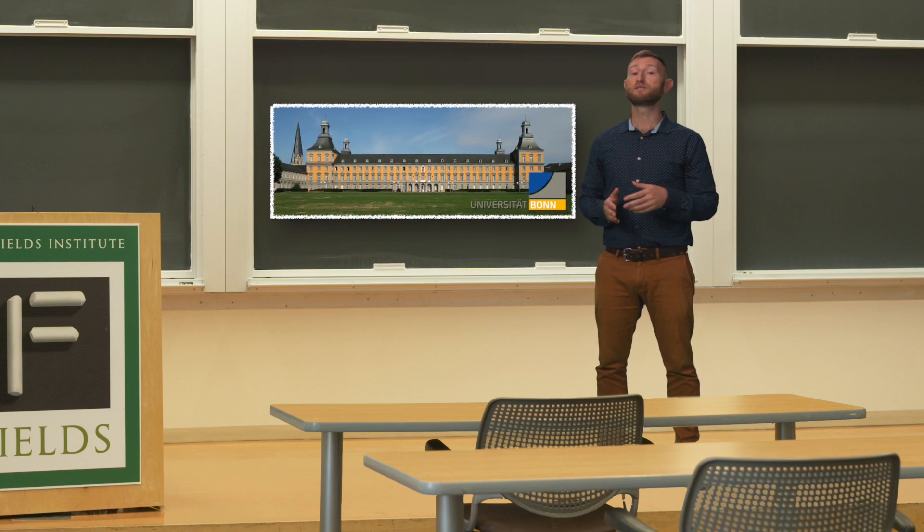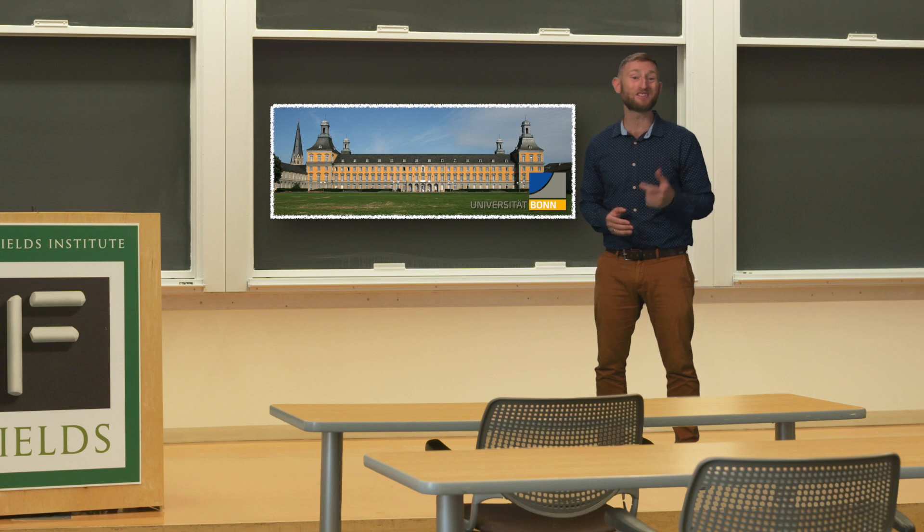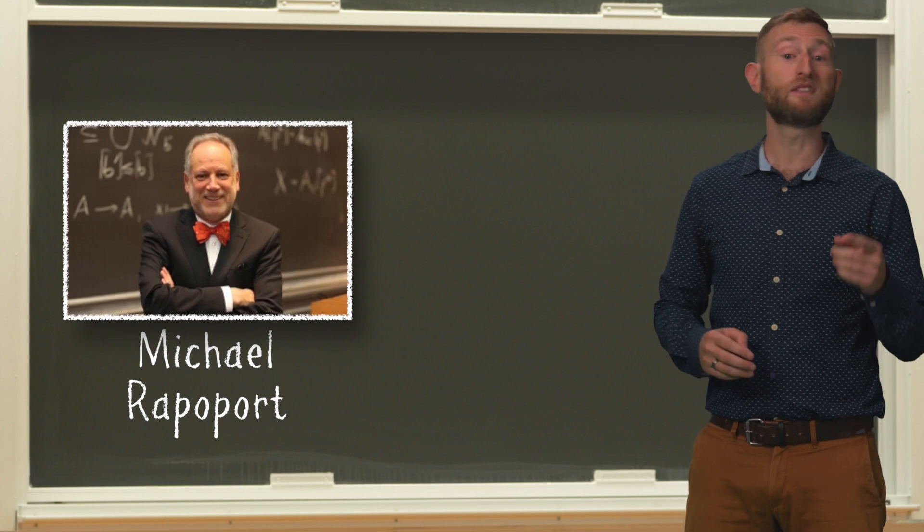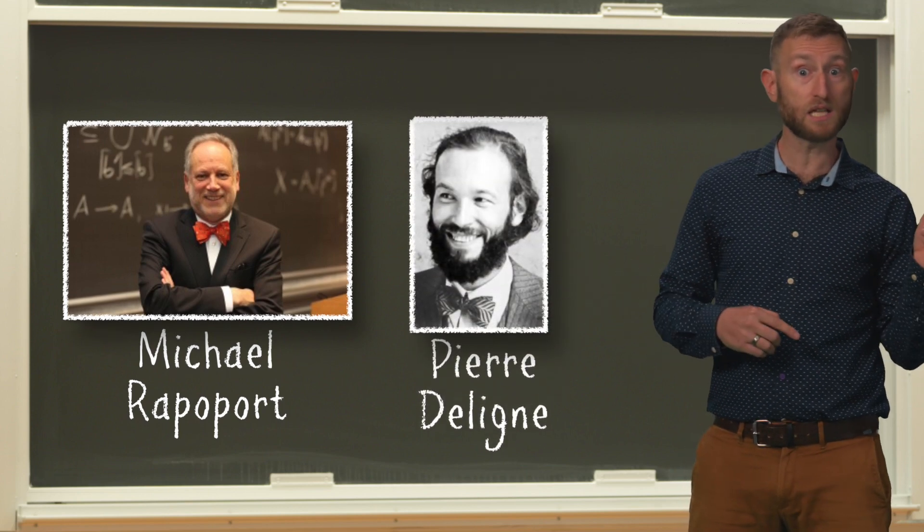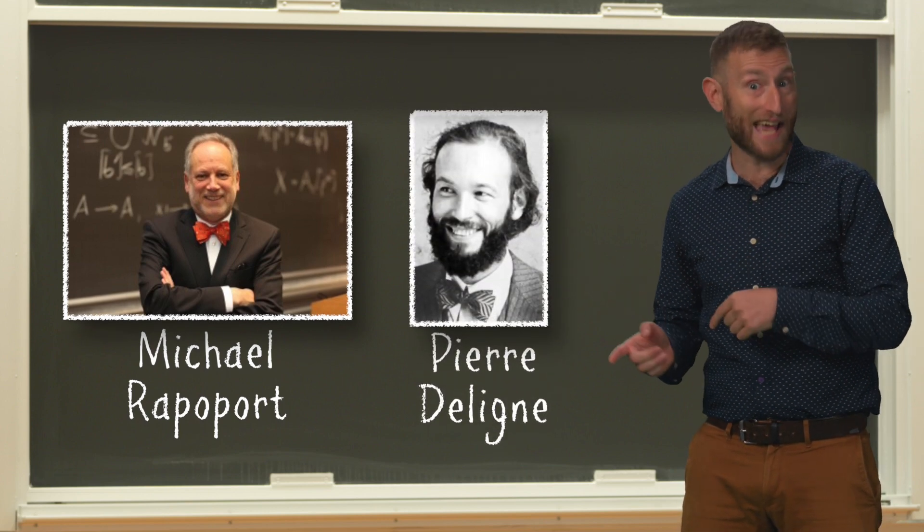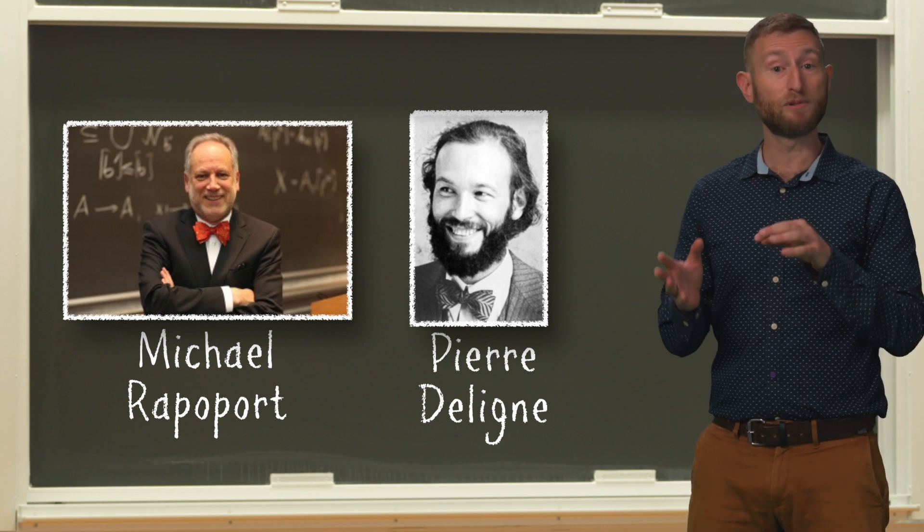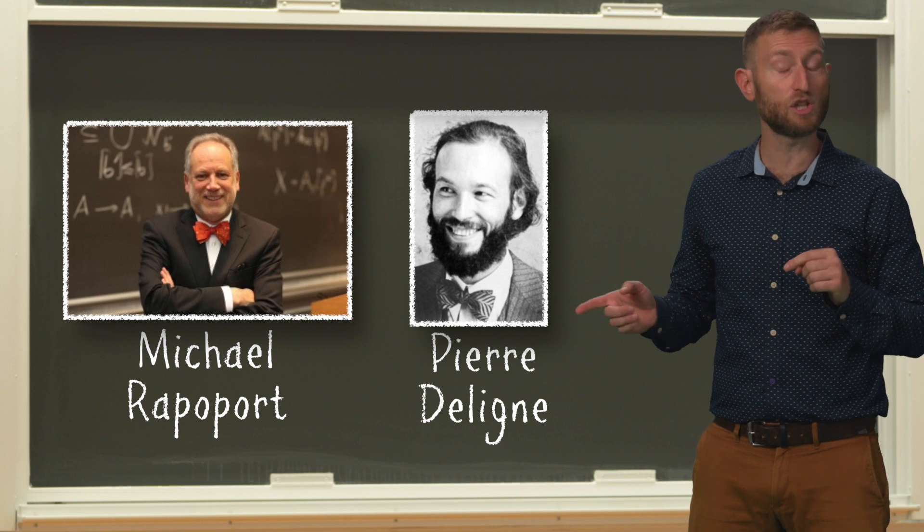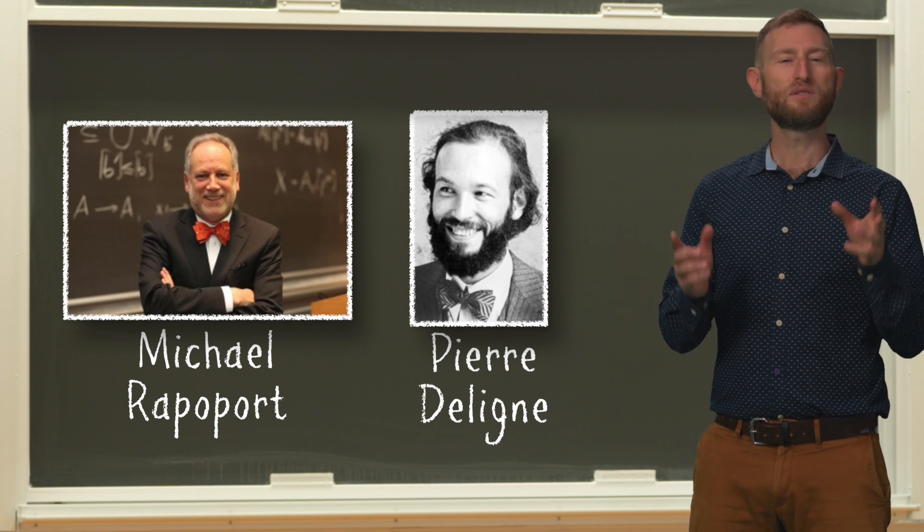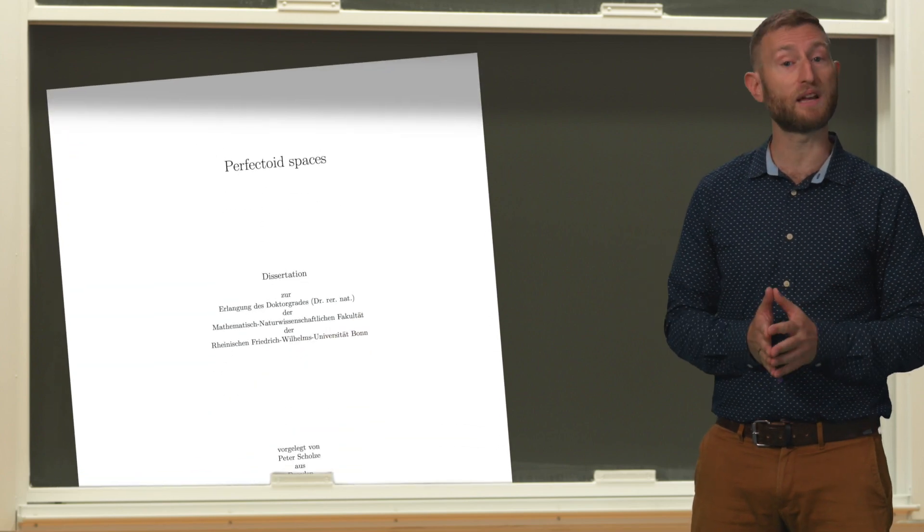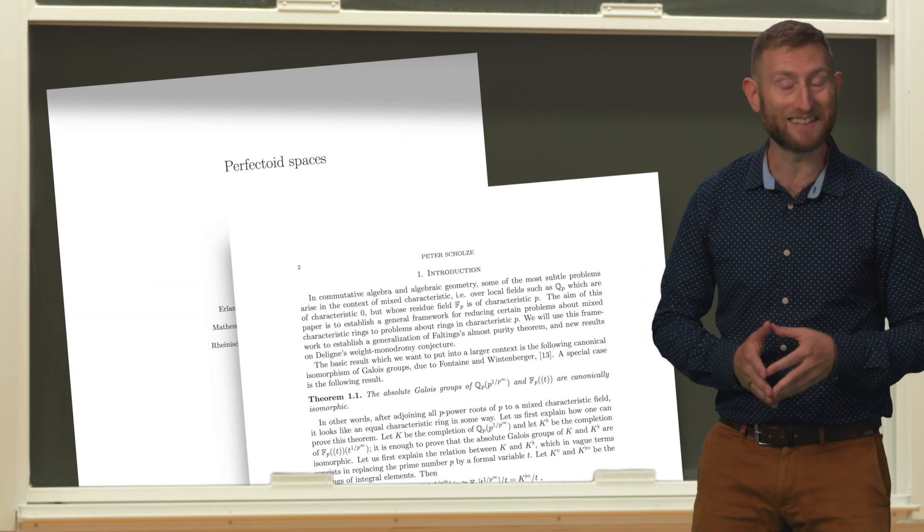Scholze attended the University of Bonn and completed his bachelor's, master's, and doctoral degrees in the space of five years. His doctoral advisor was Michael Rapoport, whose advisor in turn was Pierre Deligne, winner of the 1978 Fields Medal. Scholze's dissertation at Bonn settled a problem posed by Deligne decades earlier. This dissertation, which carried the title Perfectoid Spaces, was an instant sensation.